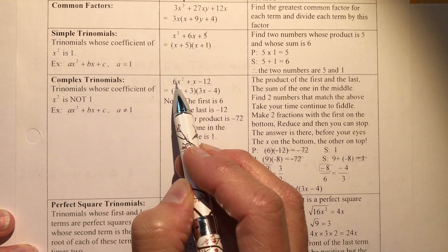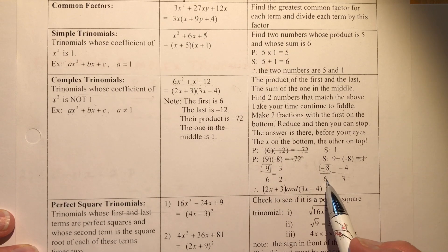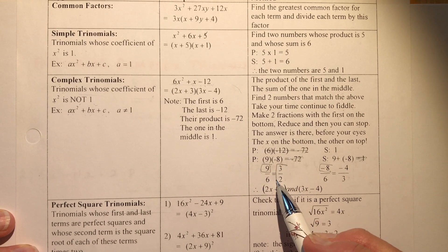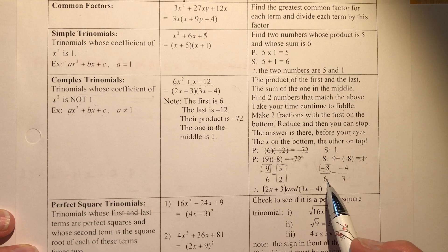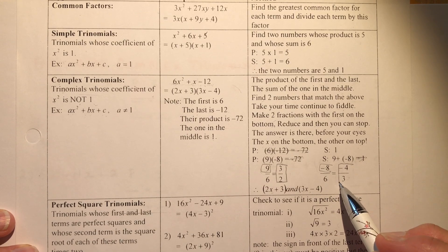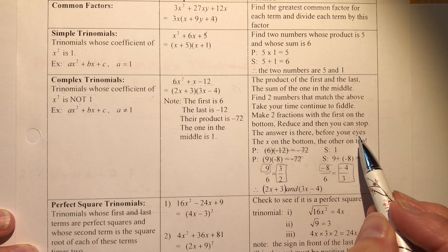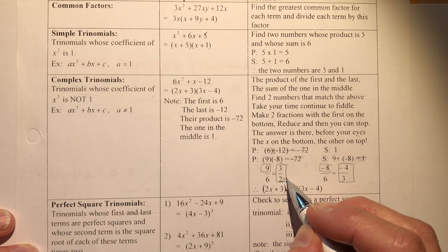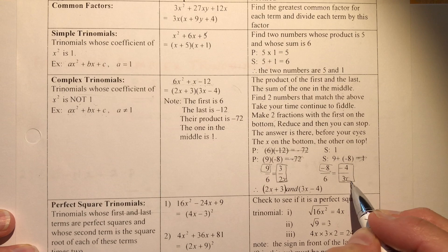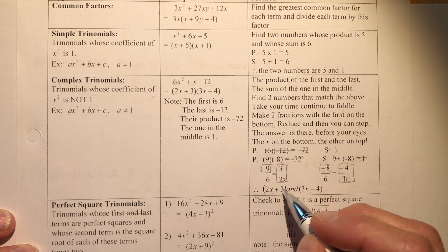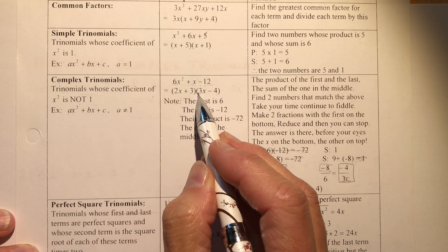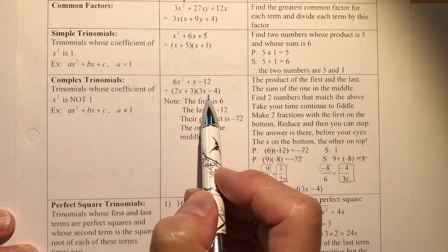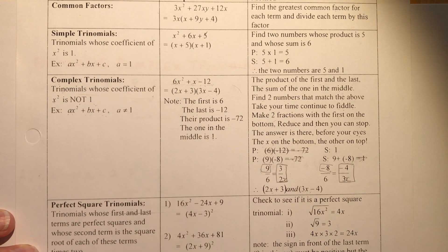The first number is 6, so I make two fractions with 6 on the bottom. Nine over 6 reduces to 3 over 2, and minus 8 over 6 reduces to minus 4 over 3. The answer is there before your eyes — the x on the bottom, the other on top — giving us (2x + 3)(3x − 4). You can expand to double-check, or plug in x = 1 into each bracket and see if you get the same answer.